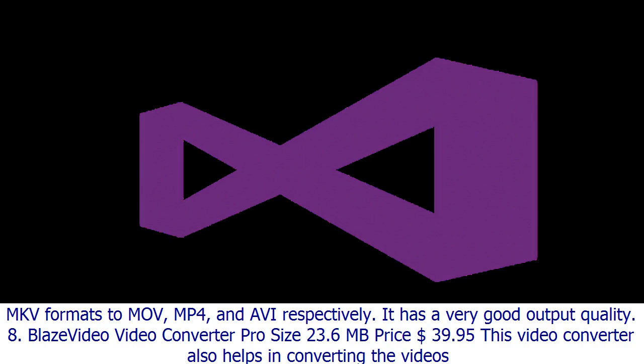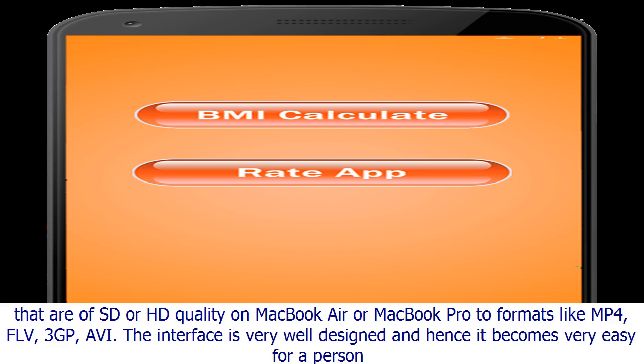Number seven: Have-to Video Converter. Size: 30.5 MB. Price: $35. This converter supports a number of video and audio formats, allowing users to convert FLV, VOB, and MKV formats to MOV, MP4, and AVI respectively. It has very good output quality.